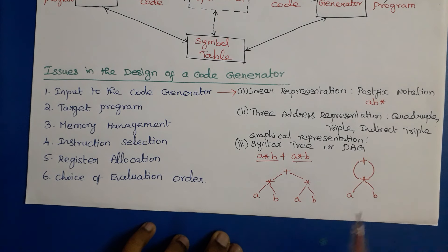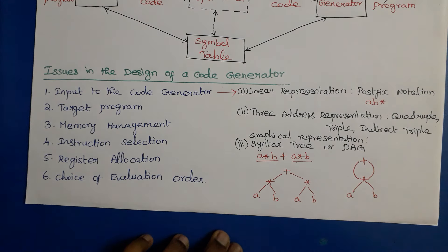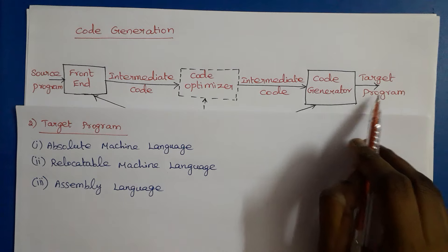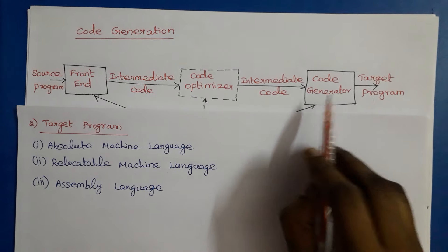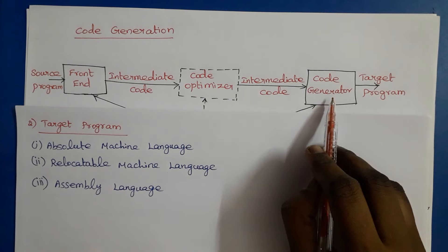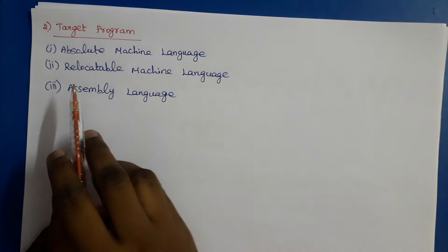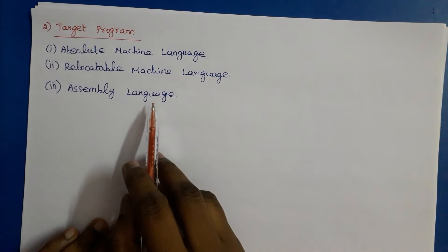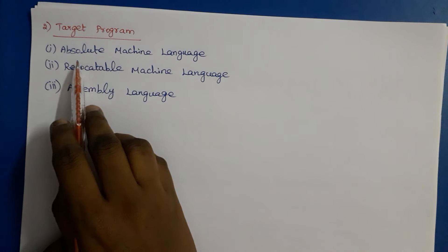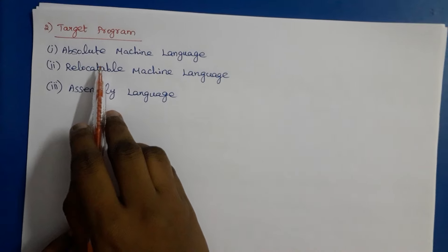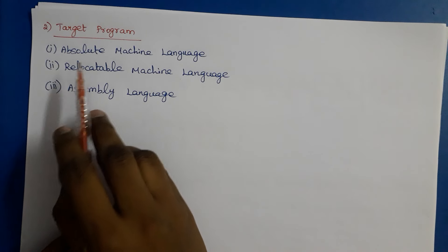The second issue is the target program — the output of the code generator. The code generator's output may be of three kinds: it may produce absolute machine language, relocatable machine language, or assembly language.